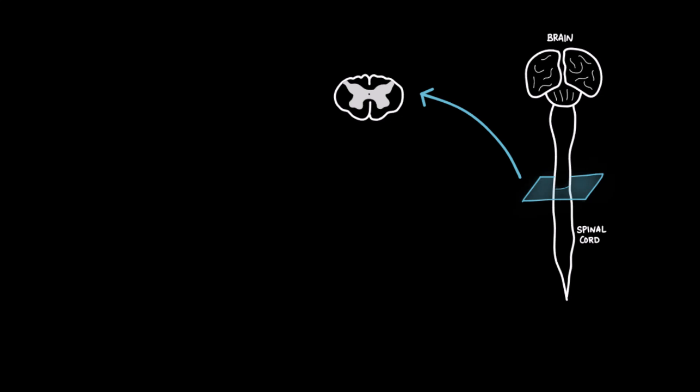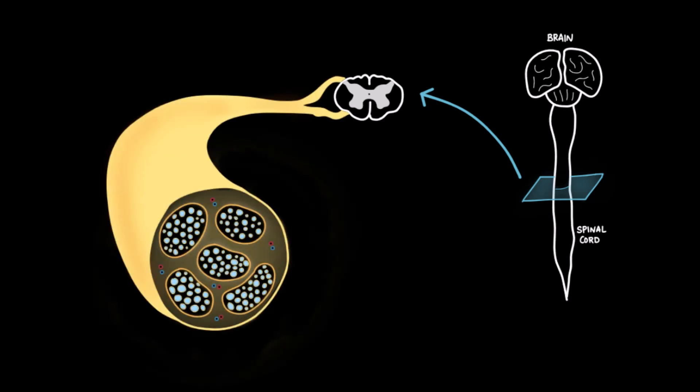First, let's start with some anatomy of the nervous system. The brain and spinal cord together make up the central nervous system. If we take a cross-section of the spinal cord, we can see the gray and white matter. From the spinal cord, two roots branch out: the dorsal root, which carries sensory information into the spinal cord, and the ventral root, which carries motor commands out to the body.